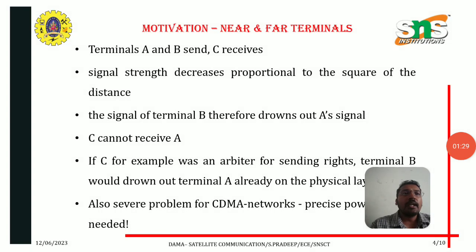In the near and far terminal problem, terminals A and B both send, and C receives. Signal strength decreases proportional to the square of the distance. The signal of terminal B therefore drowns out A's signal, so C cannot receive A's message. If C, for example, was an arbiter for sending rights, terminal B would drown out terminal A already at the physical layer. This is also a severe problem in CDMA networks where power control is required.